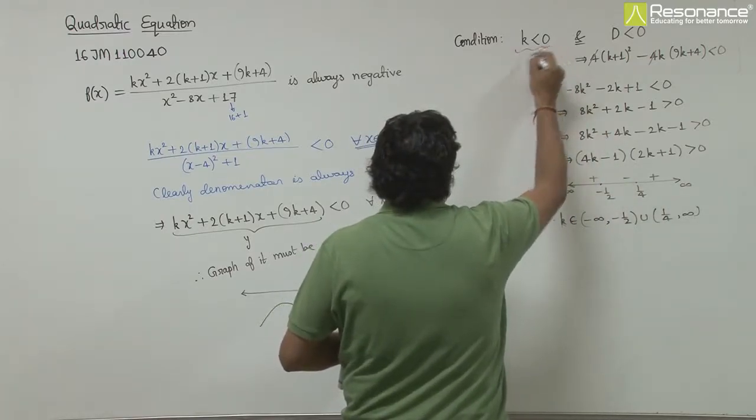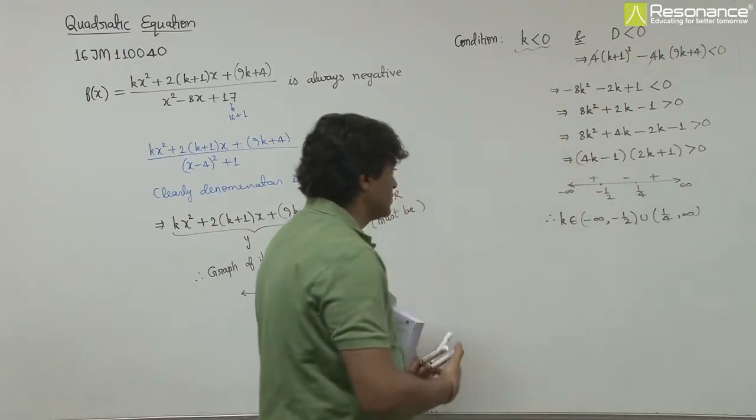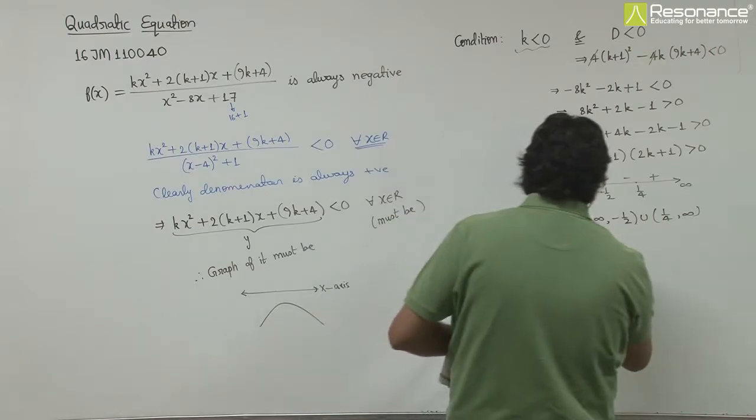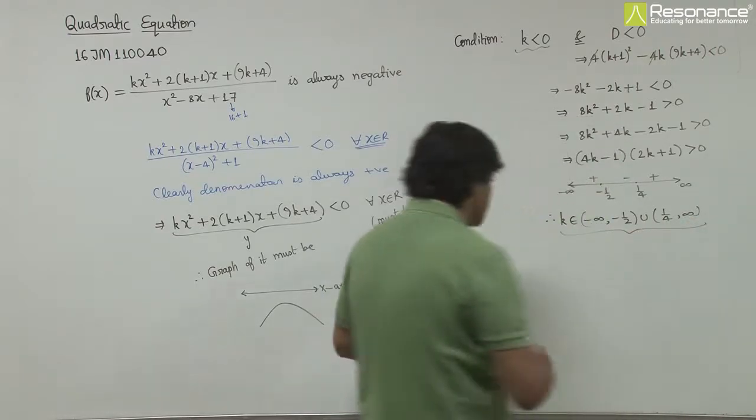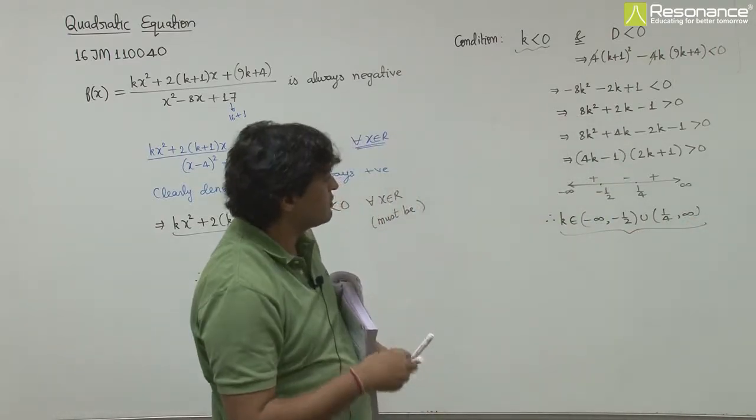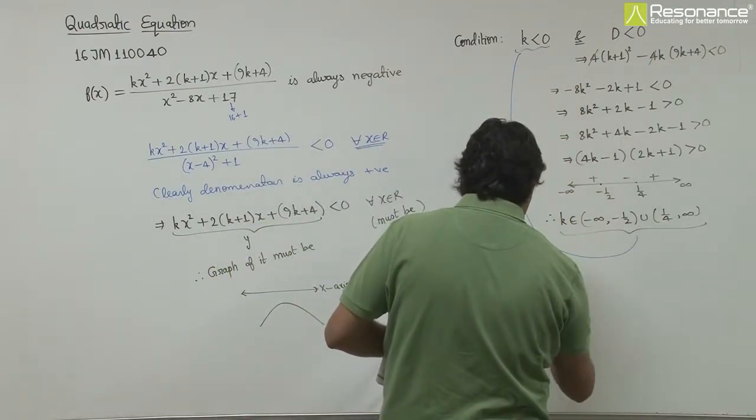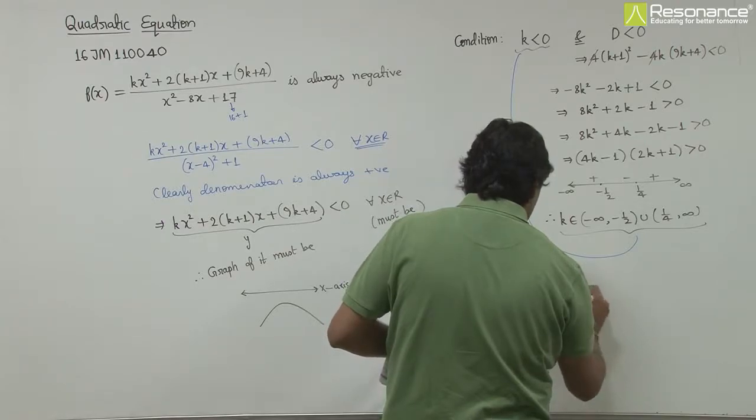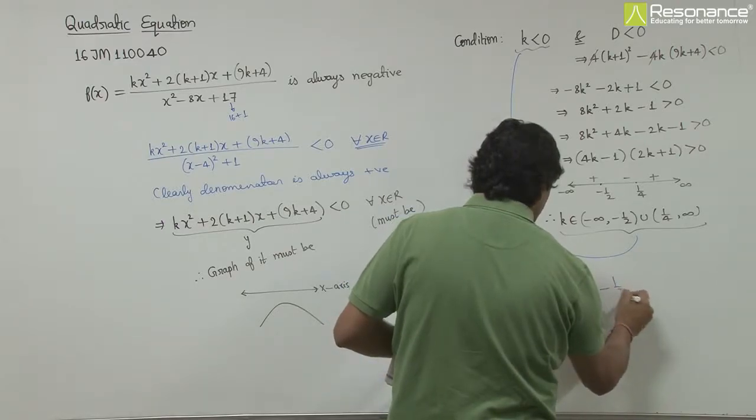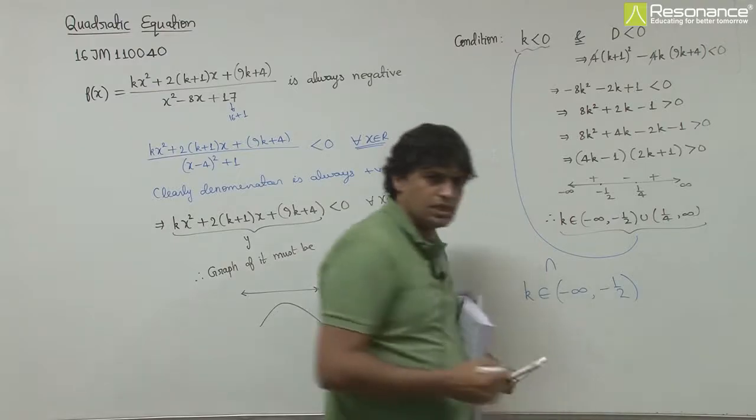But the first condition is k is less than 0. The second condition gives k belongs to (-∞, -1/2) union (1/4, ∞). Taking intersection of both conditions, intersection means k must belong to (-∞, -1/2). This is the answer.